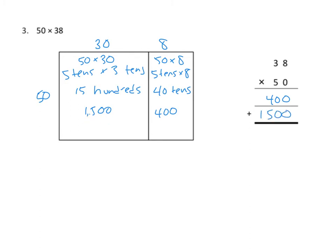If we add those two partial products together, we have zero ones, zero tens, nine hundreds, and 1,000. And that tells us that the answer to 50 times 38 is 1,900.